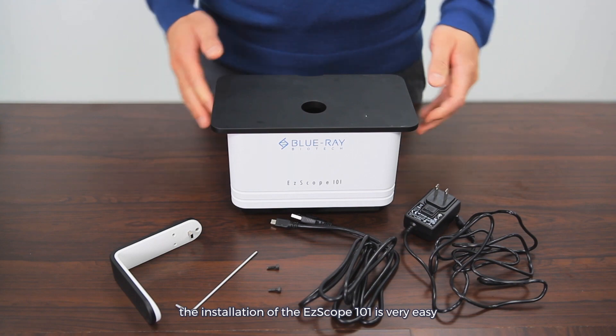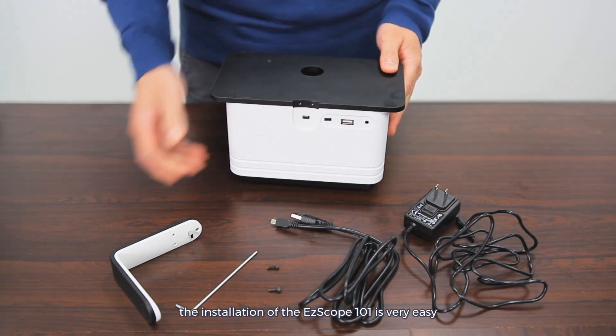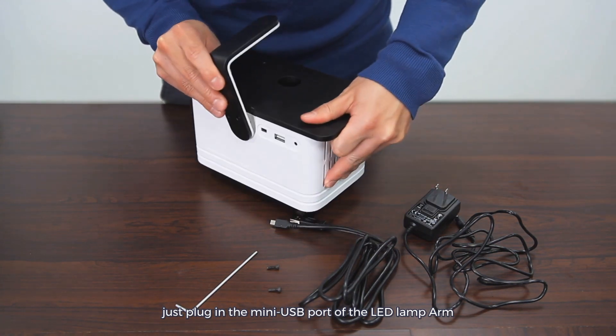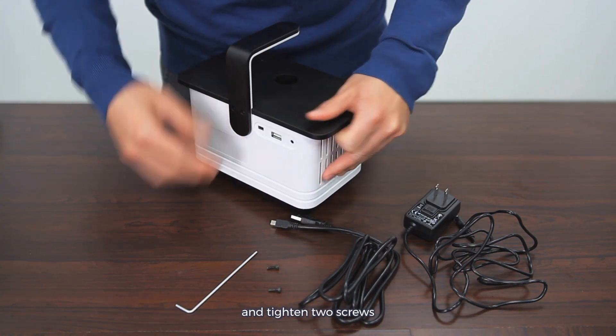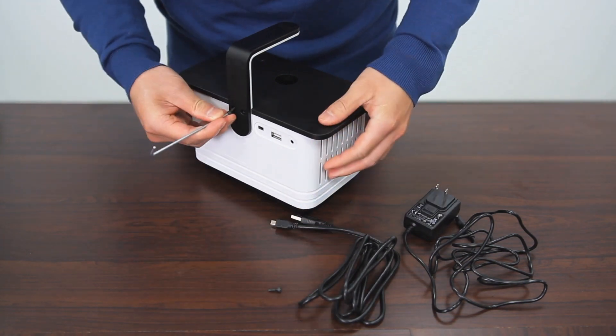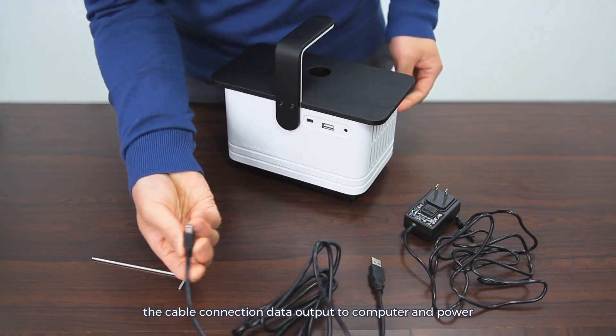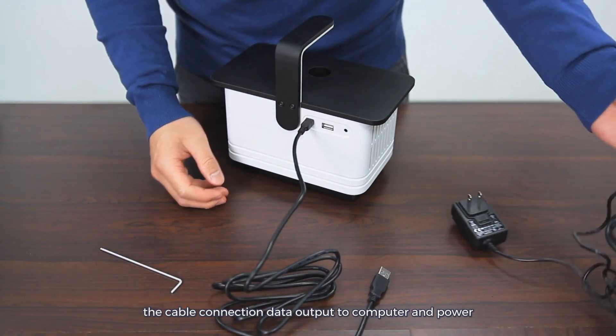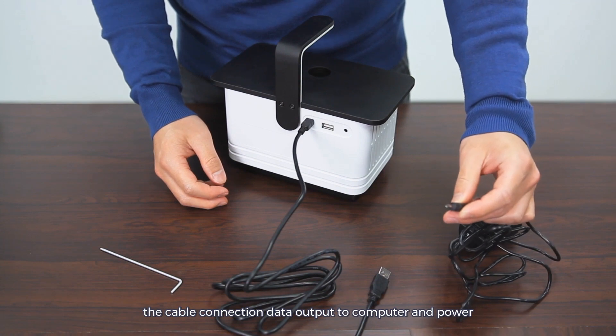The installation of the EZscope 101 is very easy. Just plug in the mini USB port of the LED lamp arm and tighten two screws, the cable connection, data output to computer, and power.